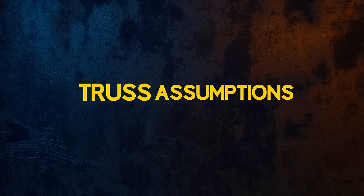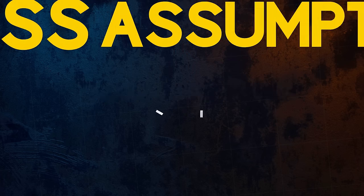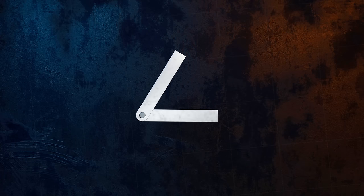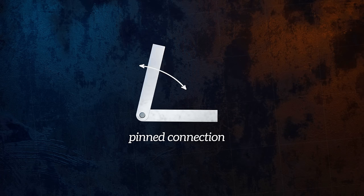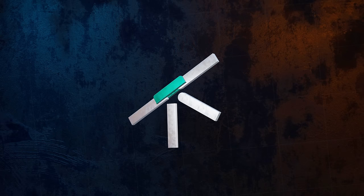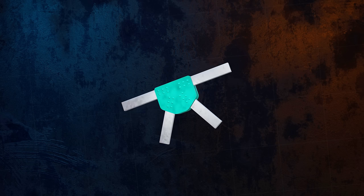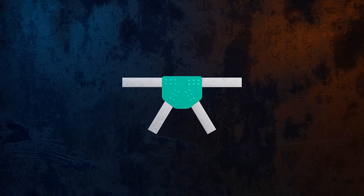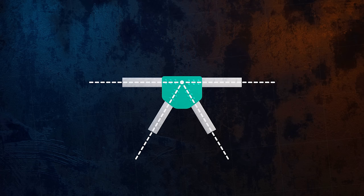First, we need to be able to assume that all of the joints in the structure can be represented by a pinned connection, meaning that members are free to rotate at the joints. The members of a truss are often rigidly connected using what is known as a gusset plate. But if the centre lines of all the members at a joint intersect at the same point, it's reasonable to assume that the joint behaves like a pinned connection.